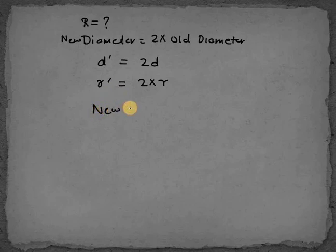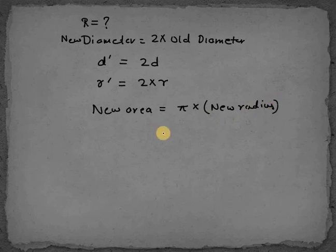Now let's talk about new area, what will be the new area? So new area will be π into new radius. Now what is our new radius? It will be π × (2r)², so it will be 4πr². What is the change in the area? 4πr².